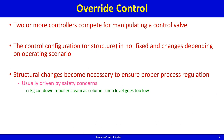These structural changes become necessary to ensure proper process regulation over a wide operating space — the same plant must run at low throughputs and also at maximum throughput. Over such a wide operating range, the same valve may need to control different things depending on where you are, usually driven by safety concerns.